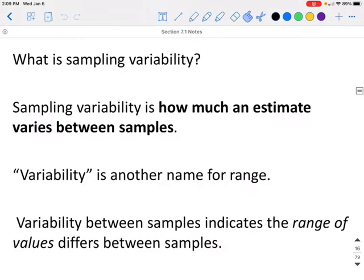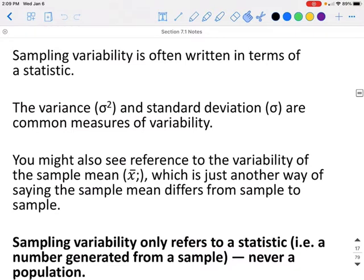What is sampling variability? Sampling variability is how much an estimate varies between samples. Variability is another name for range. Variability between samples indicates the range of values differs between the samples. Sampling variability is often written in terms of a statistic. The variance and the standard deviation are common measures of variability.